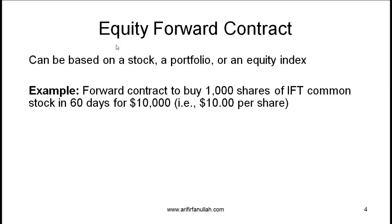Now let's talk about several kinds of forward contracts. In this reading we are primarily focused on forward contracts with financial assets. We will cover forward contracts on equity — which could be a single stock, a portfolio, or an equity index — as well as forward contracts on bonds, interest rates, and currencies. The underlying asset could be a stock, a portfolio of stocks, or an equity index.